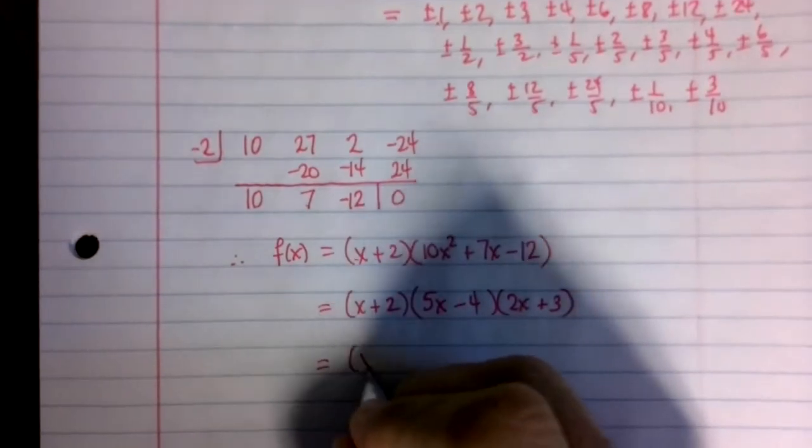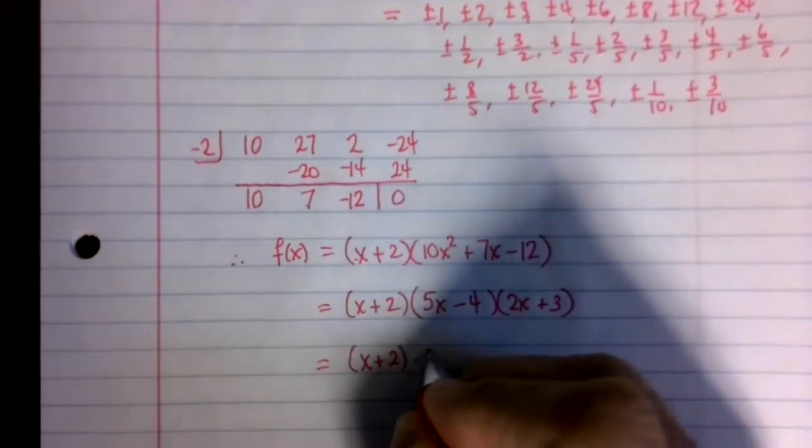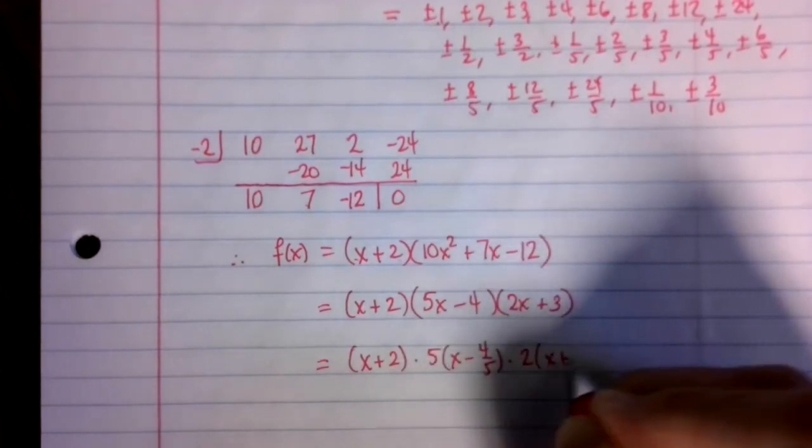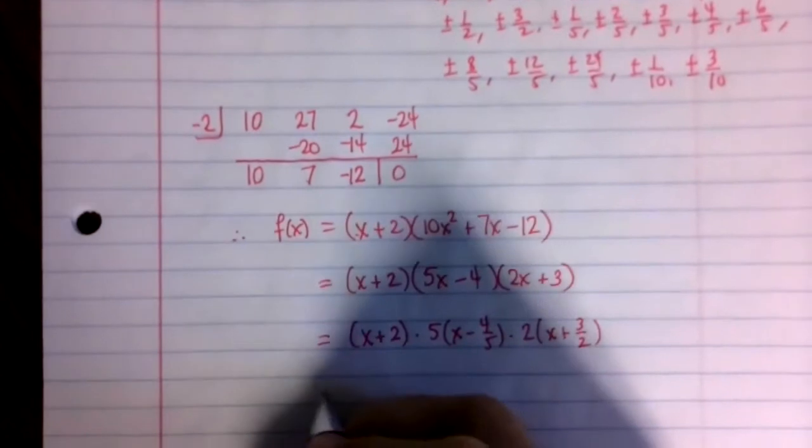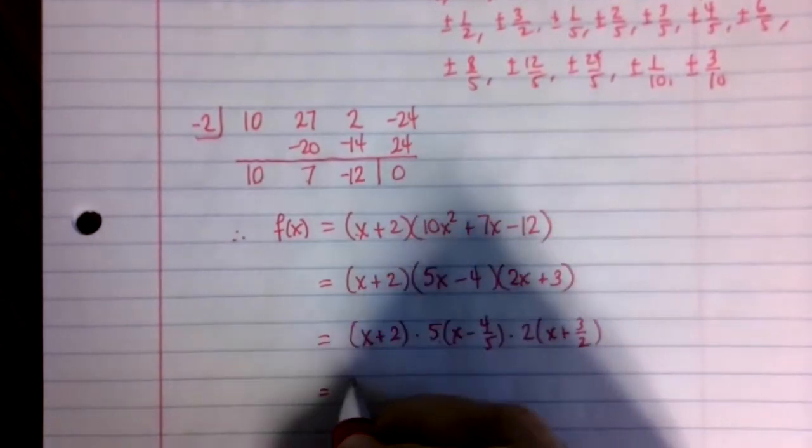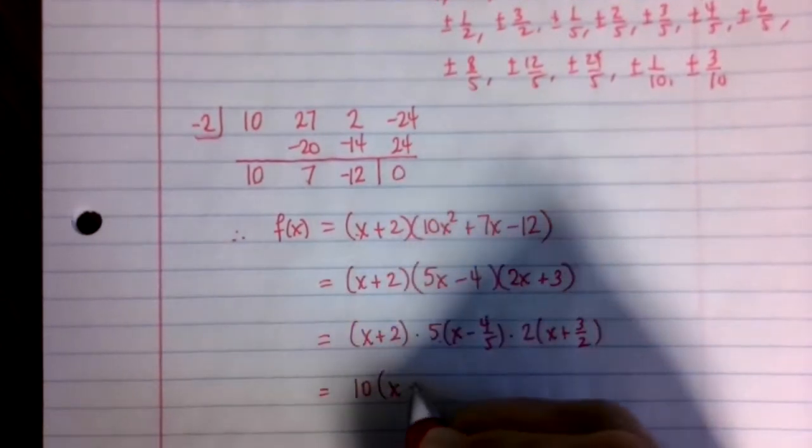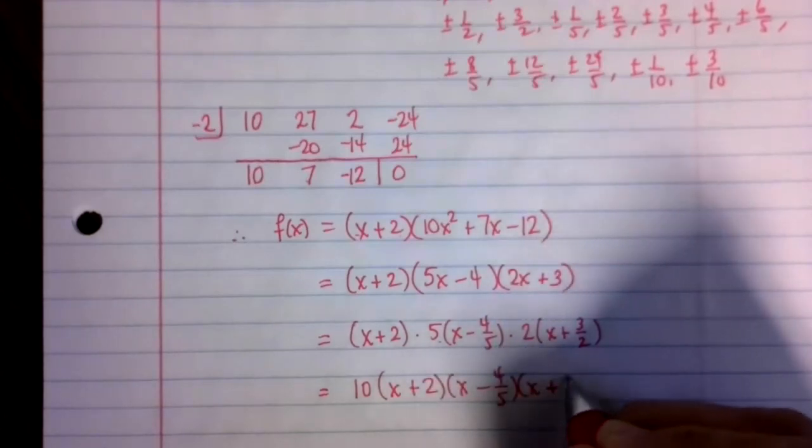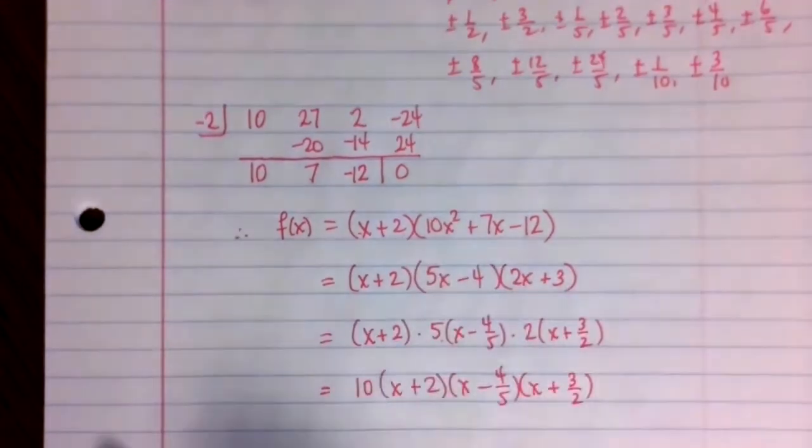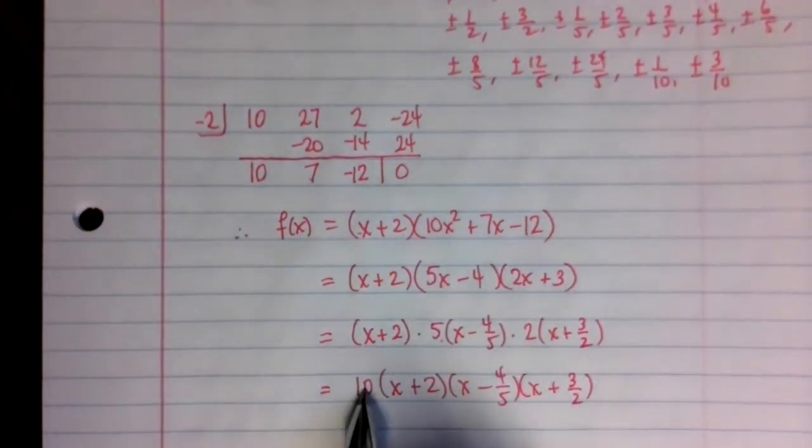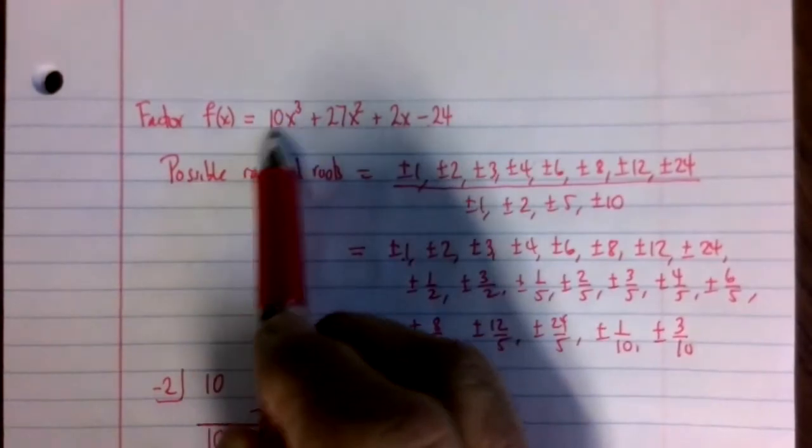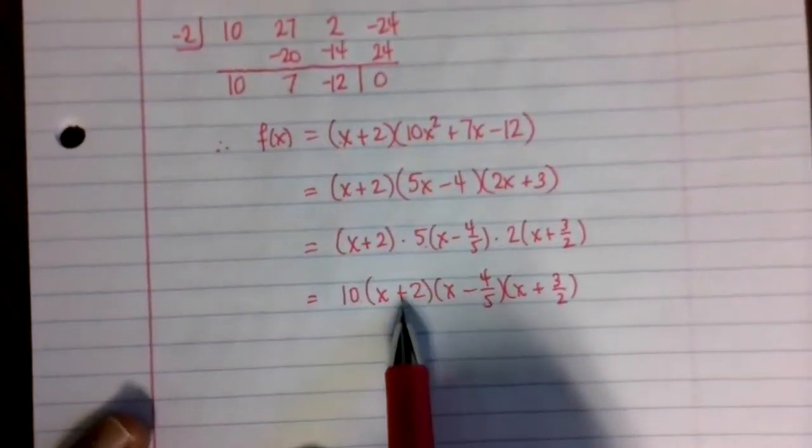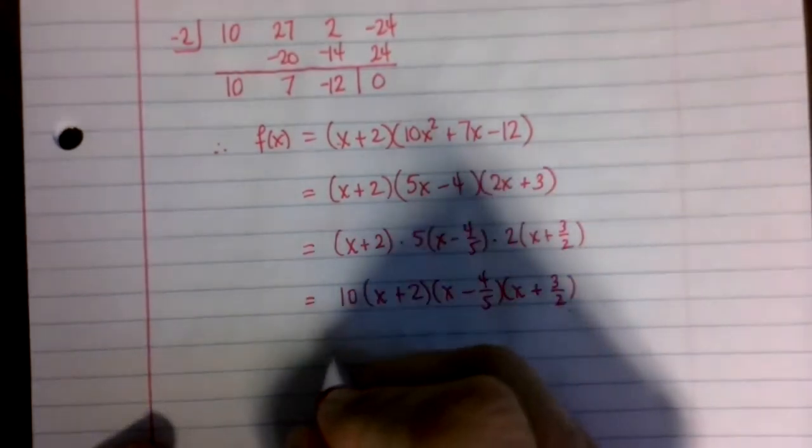I can do a little bit better than this if I write it like this: 10(x + 2)(x - 4/5)(x + 3/2). The advantage of writing it like this is that the 10 that you see here matches the 10, the leading coefficient. And also I can just simply read off the roots as negative 2, 4 fifths, and negative 3 halves.